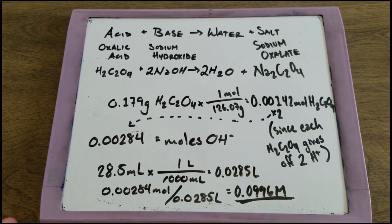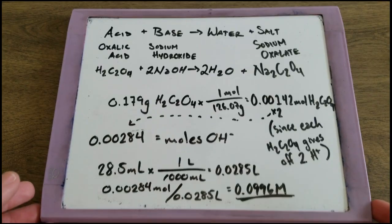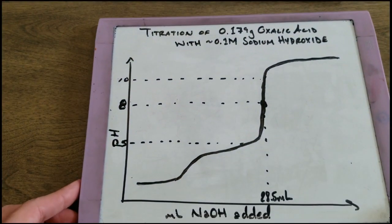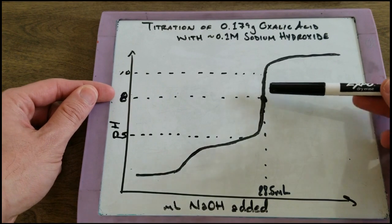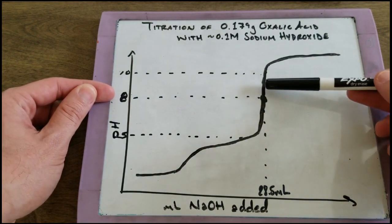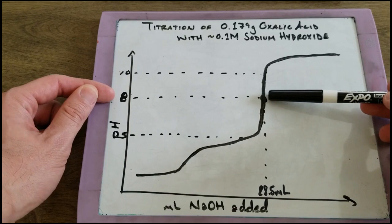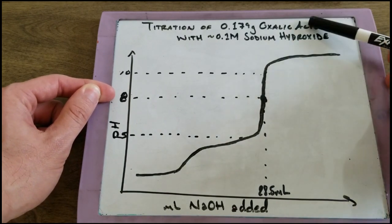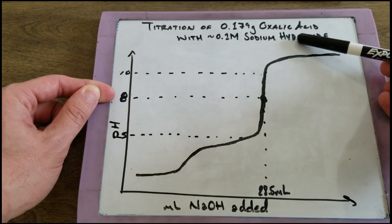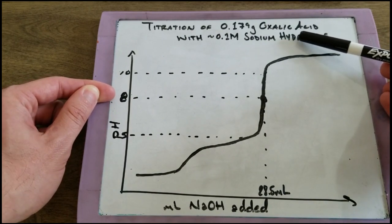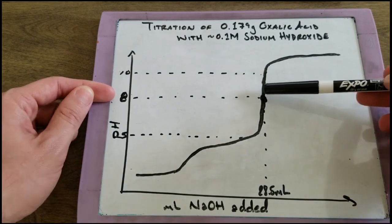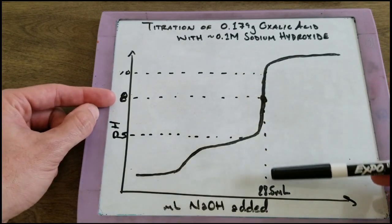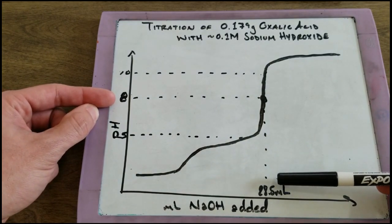Now for the calculations that's done, so we're going to analyze what happened in the graph. This is a sketch of the graph. The pH where the slope was steepest was approximately eight, which is expected. It's slightly basic because this is a weak acid and a strong base. When a weak acid and a strong base react, their equivalence point is higher than seven. And so it was approximately eight and the volume was 28.5 milliliters.